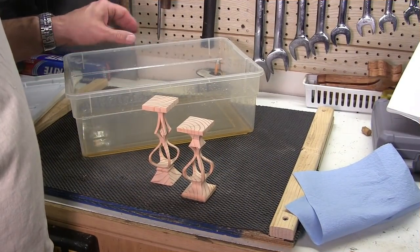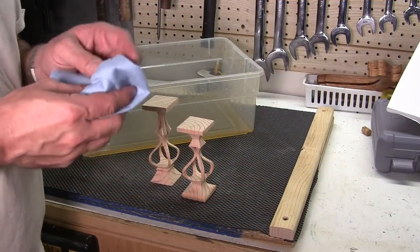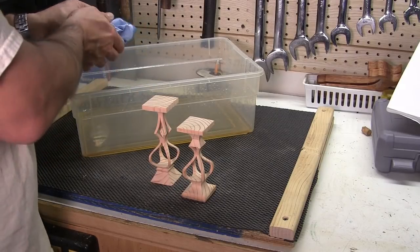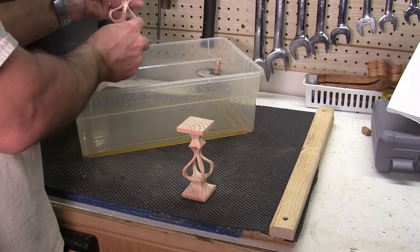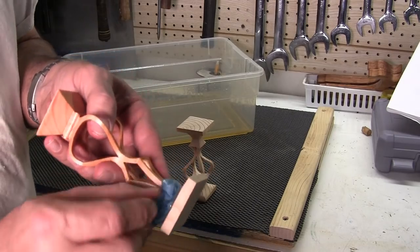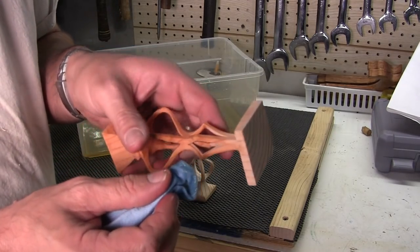I've got a container here of boiled linseed oil and what I'm going to do is just take a rag, dip it in here, get some of it on here and I'm going to wipe it on this cedar. I think it's really going to do a good job of bringing out the grain.